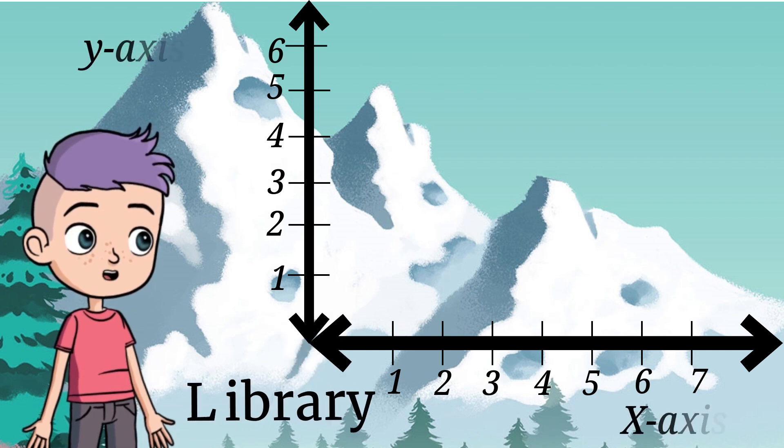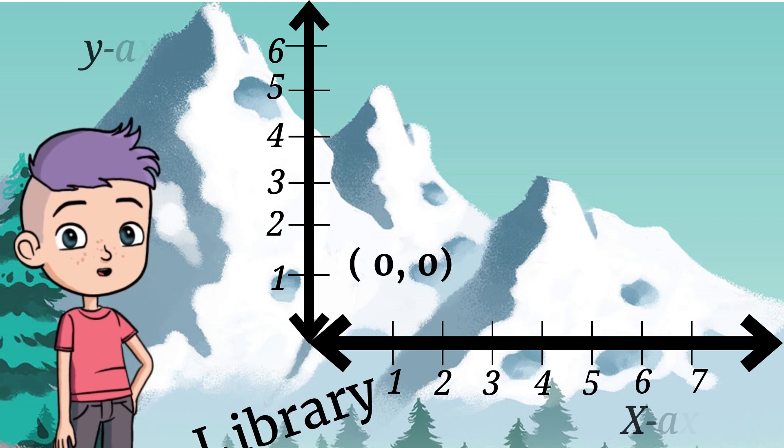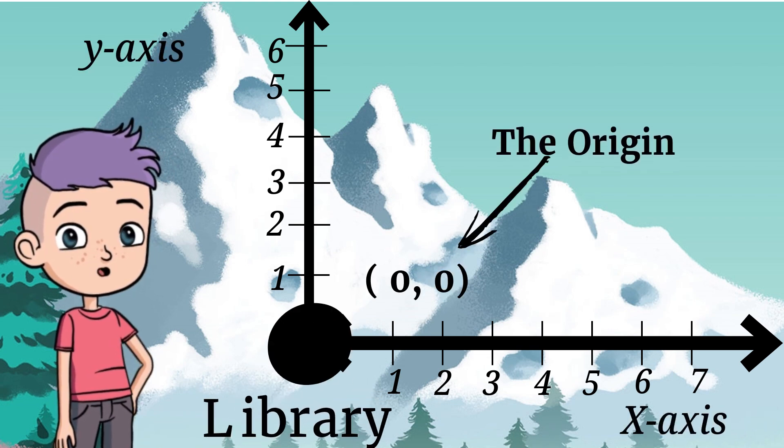What is the ordered pair for the library? Great! 0, 0. 0, 0 is called the origin.